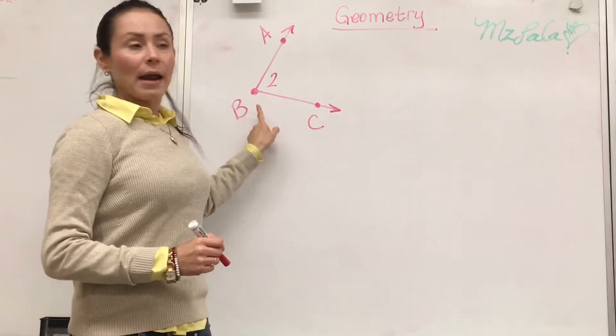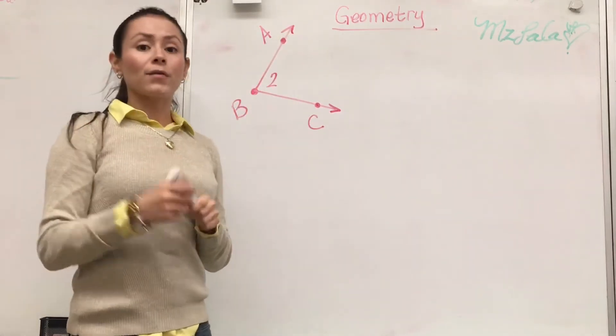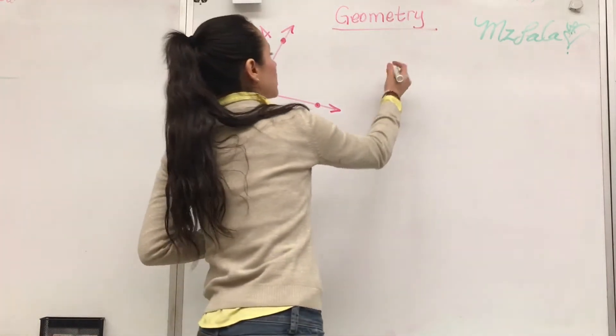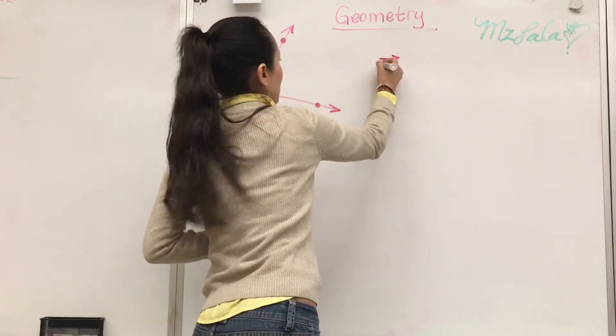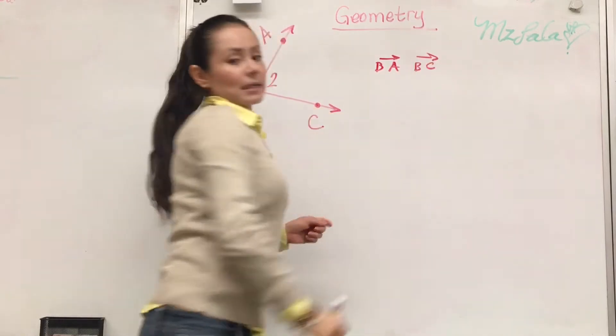So we have ray BA and we have ray BC. And if you wanted to write that, we would say ray BA and ray BC.